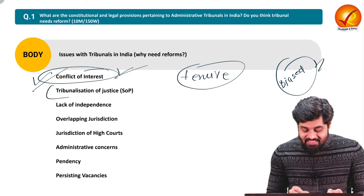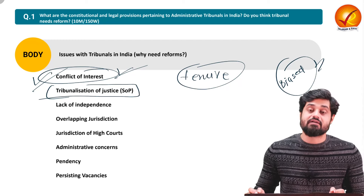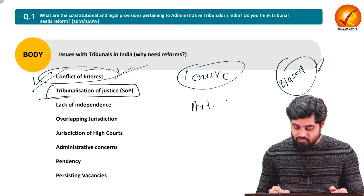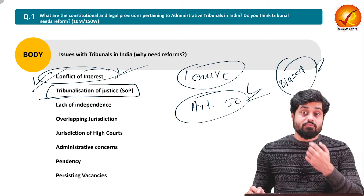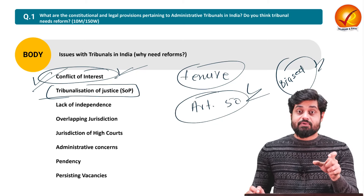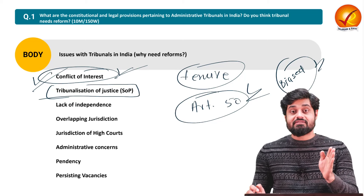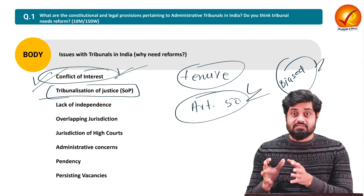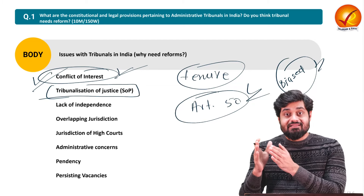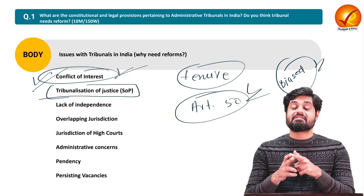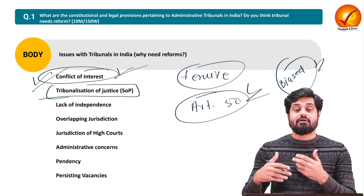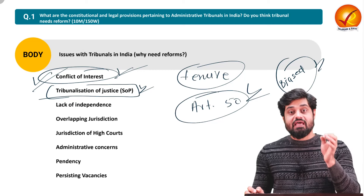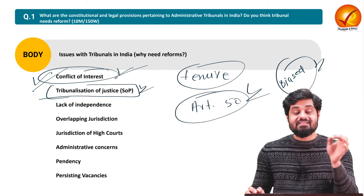Second issue is tribunalization of justice and separation of powers. In India we have judiciary and executive that must be separated — Article 50 of the Constitution states that the state shall take steps to separate the executive from the judiciary. In a parliamentary system, strict separation between executive and legislature is not possible since the executive is derived from the legislature, making it all the more important to ensure separation of the executive from the judiciary.